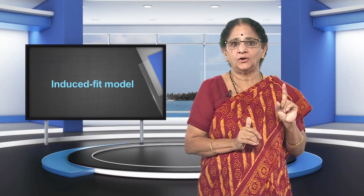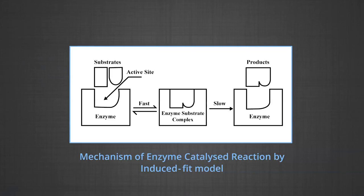Now let us come to the induced fit model. Spectroscopic and X-ray crystallographic studies show that when a substrate molecule reaches the active site, the enzyme changes its shape to accommodate the substrate. It is this ability of the enzyme to change its shape that determines whether or not the reaction will take place. According to this model, the substrate induces the active site to change in order to fit the substrate, unlike the rigid lock and key model. As shown in the figure, it can be imagined as a hand in a glove, in which the glove — the active site — does not get its functional shape until the hand, that is the substrate, fits into it.